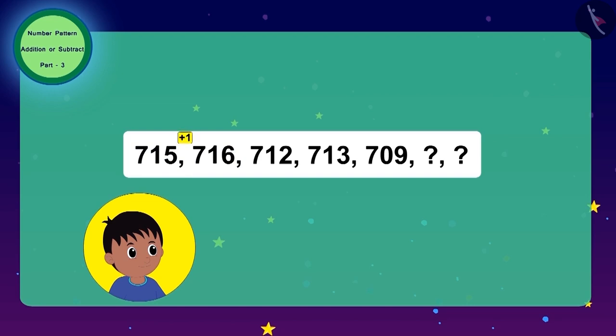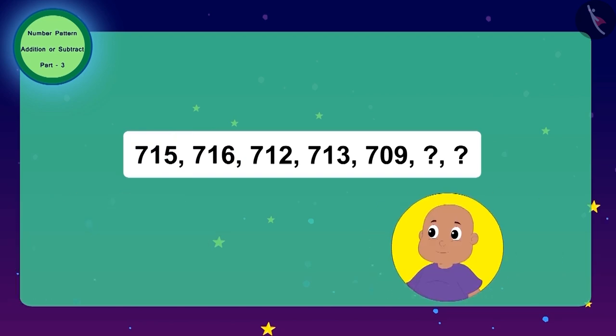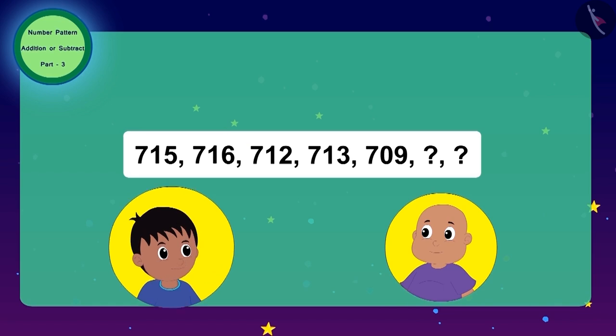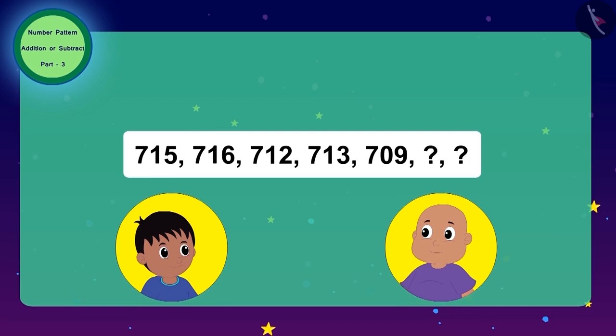one is added to get the next number. But Babu looked at the second and third number of the pattern and he felt that we can get the next number by subtracting four from the previous number. What do you think? Whose answer is correct, Raju's or Babu's? Come, let's find the answer to this code here with Raju and Babu.